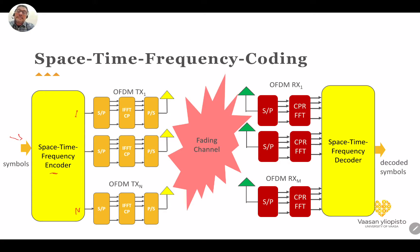Over each antenna we implement an OFDM transmitter — OFDM transmitter 1 up to OFDM transmitter N. Each has the serial-to-parallel converter, the IFFT as described in the OFDM part, and the cyclic prefix, followed by the parallel-to-serial converter and then transmission over each branch.